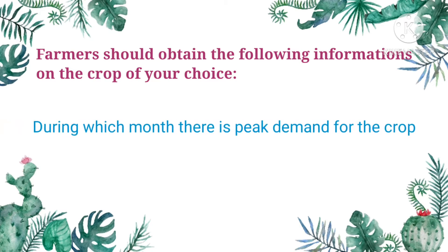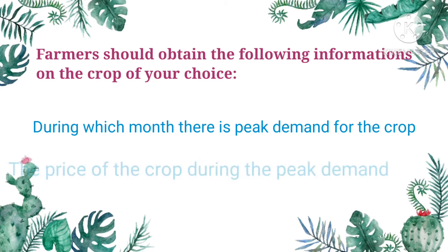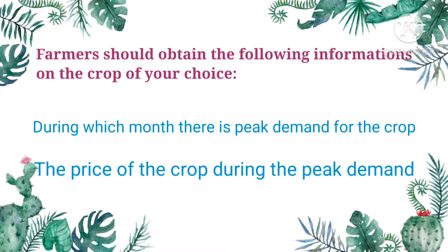First, during which month there is peak demand for the crop. Farmers need to know this information in order to generate higher income. Do not produce a crop that is not in demand for the month to avoid wastage of your produce or harvest. Second, the price of the crop during the peak demand. The price during peak demand will be your reference for how much you are going to sell and how much profit or markup should be applied.